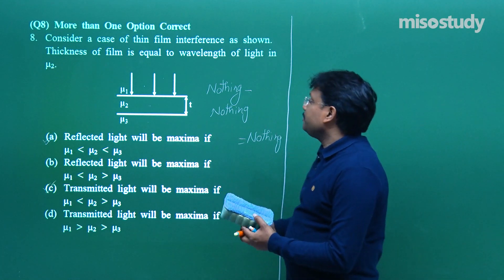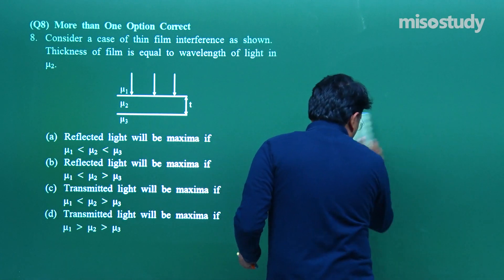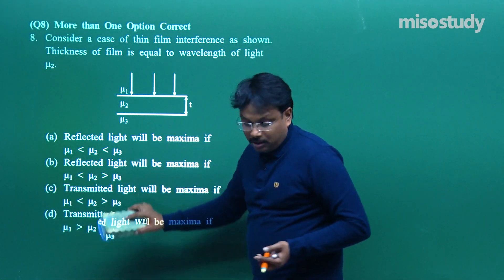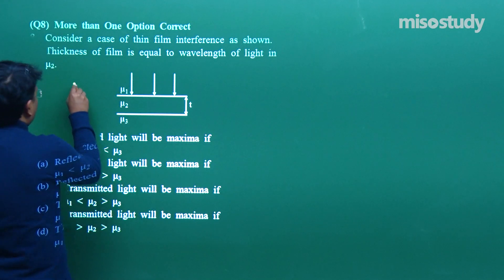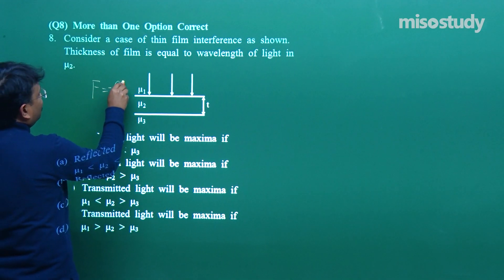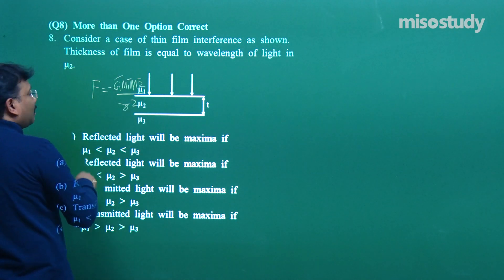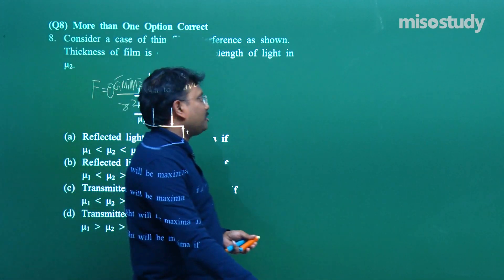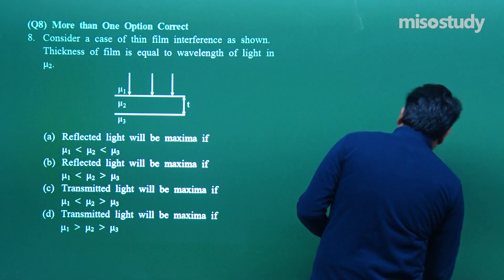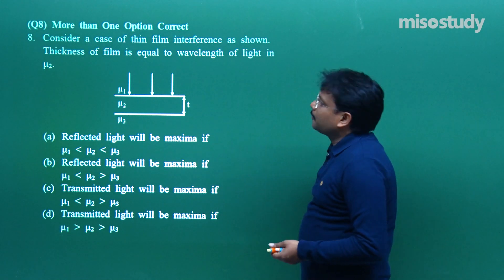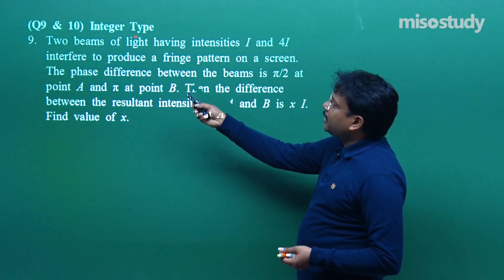In physics, unlike pure mathematics, you cannot just apply formulas mechanically. You have to think physically. For example, in the formula F = −GM₁M₂/R², the negative sign doesn't mean what it means in mathematics — it means gravitational force is always attractive in nature. Physics understanding must accompany the mathematics.